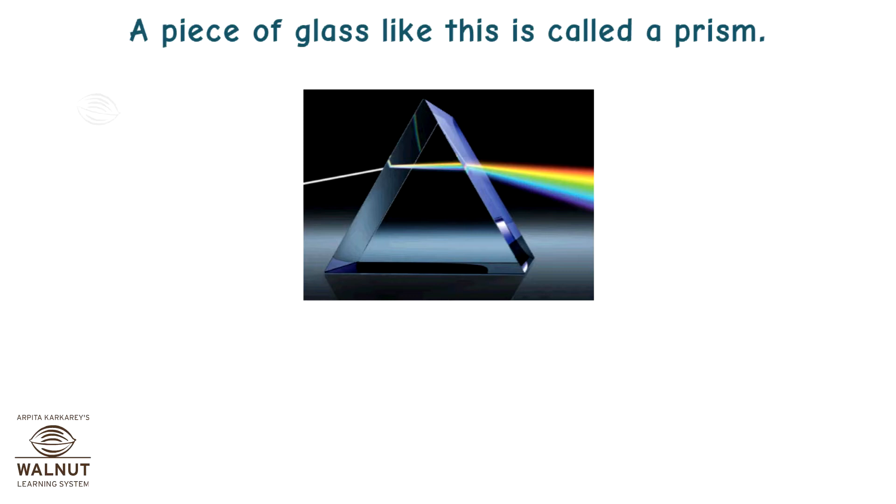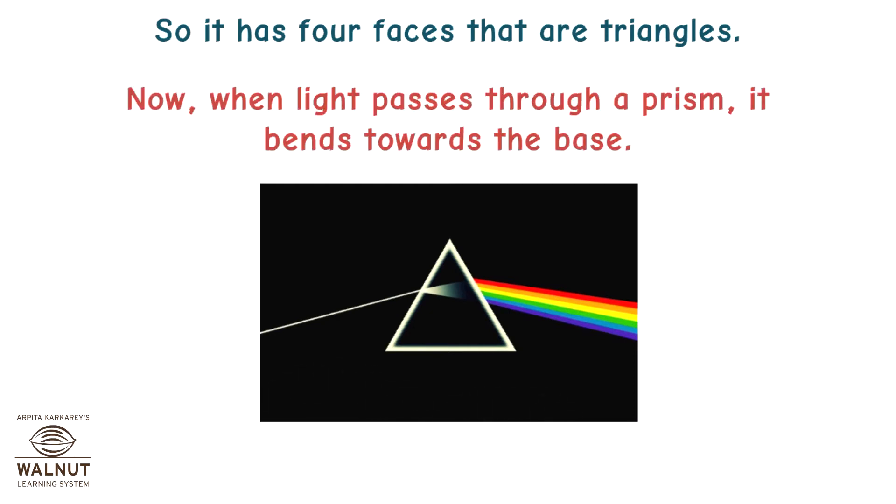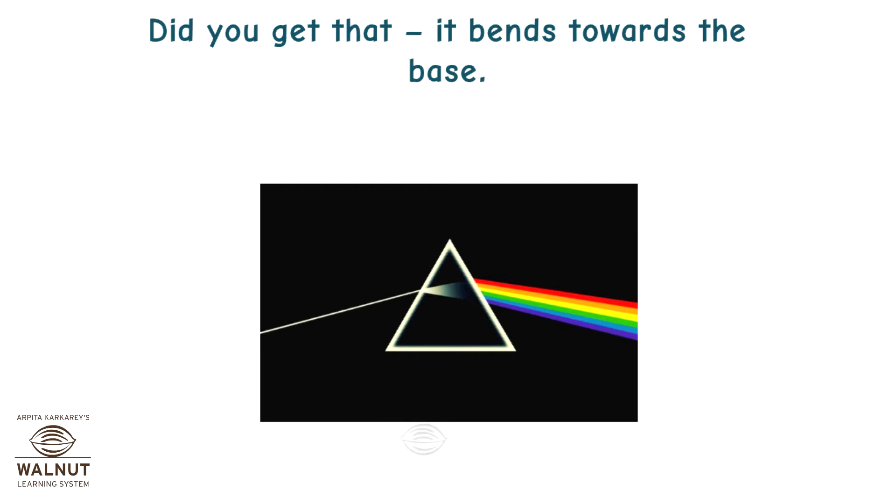A piece of glass like this is called a prism. It has a square base and a point at the top. So it has four faces that are triangles. Now, when light passes through a prism, it bends towards the base. Did you get that? It bends towards the base.